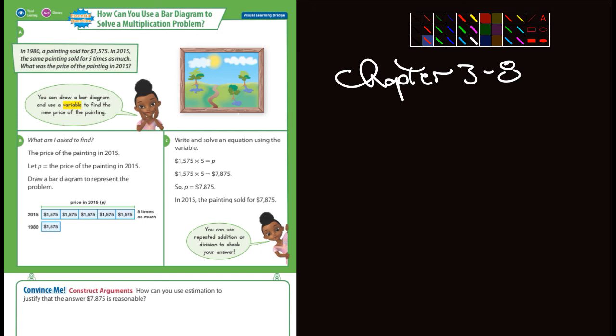Convince me, how can you use estimation to justify that the answer is reasonable? Well, so instead of making it $1,575, how would have we just made it $1,500 times five? I think that would be a pretty fair estimation.